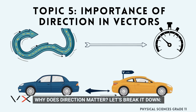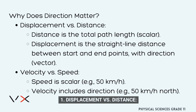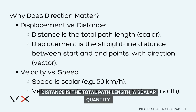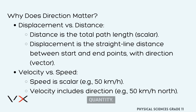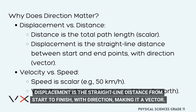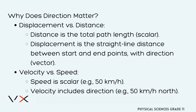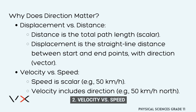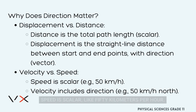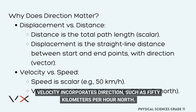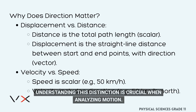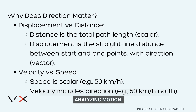Why does direction matter? Let's break it down. First, displacement versus distance: distance is the total path length, a scalar quantity. Displacement is the straight-line distance from start to finish with direction, making it a vector. Second, velocity versus speed: speed is scalar, like 50 km/h. Velocity incorporates direction, such as 50 km/h north. Understanding this distinction is crucial when analyzing motion.